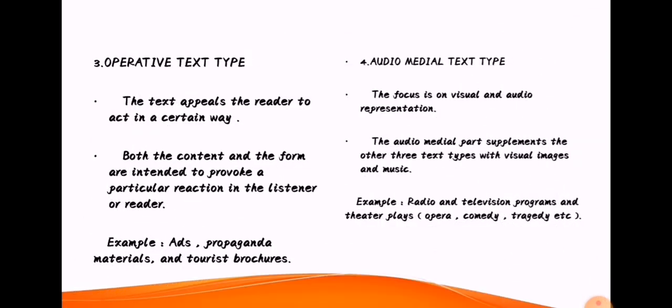Third is operative text type. The text appeals to the reader to act in a certain way. Both the content and the form are intended to provoke a particular reaction in the listener or reader. Examples include ads, propaganda materials, and tourist brochures.